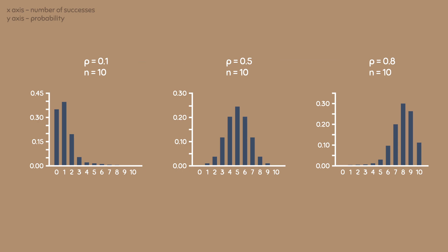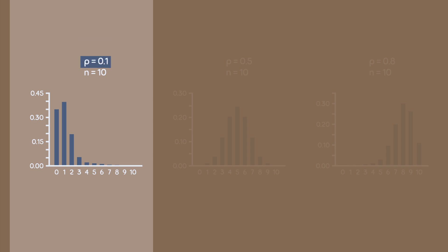Any deviations from 0.5 cause the binomial distribution to be skewed. When p is equal to 0.1, this means that we only have a 10% chance of success. For the 10 trials, we should expect to get very little success, which is why the probability is higher towards 0 and less towards 10. With a probability of success of only 10%, it is very unlikely to get a success 10 times in a row, which is why the probability of getting 10 successes is so small that we can't even see it on the bar graph.